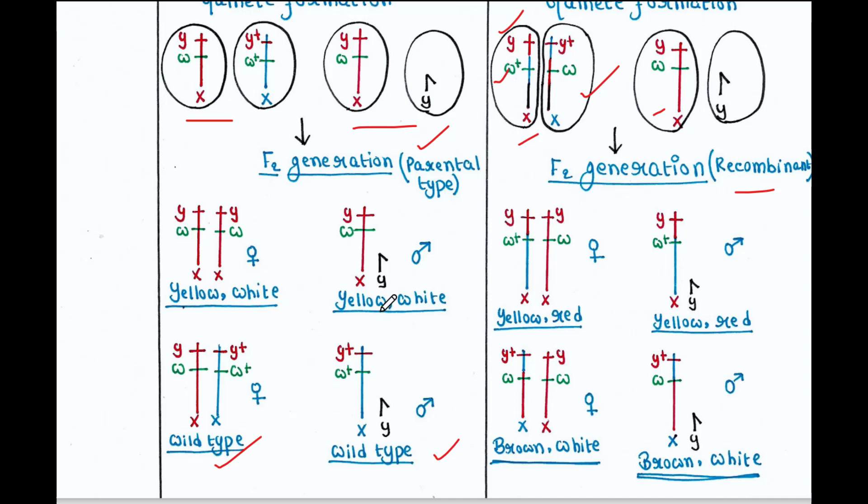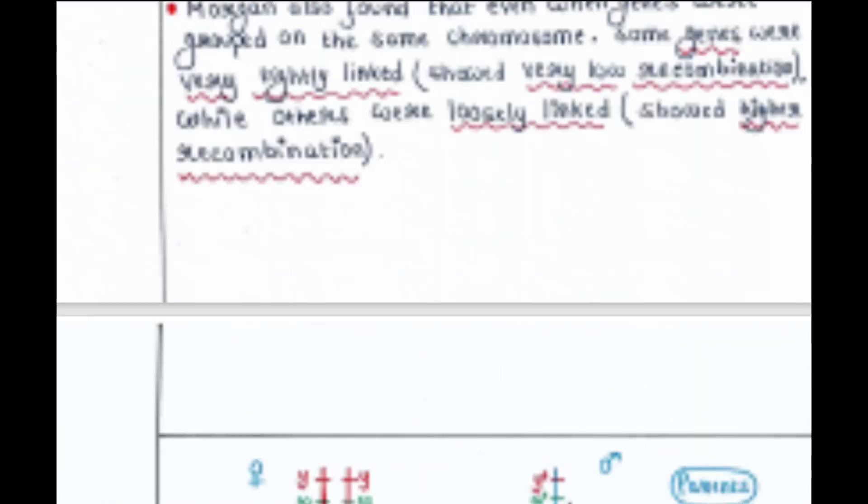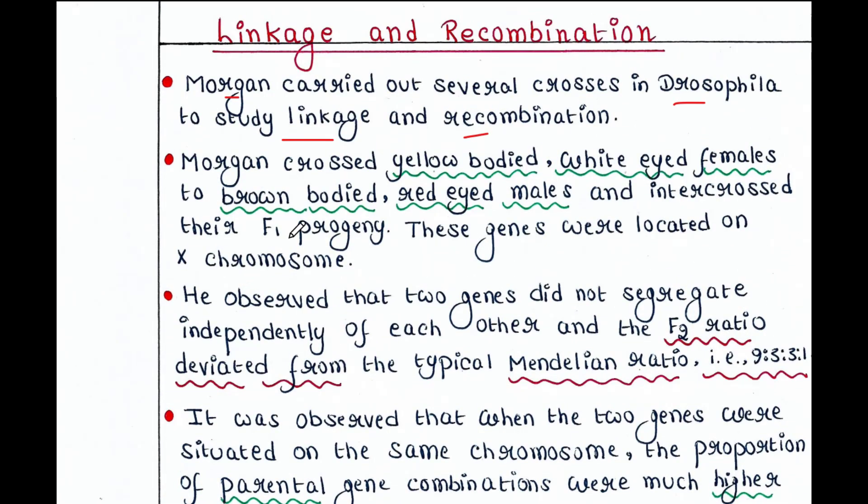Now let's check the text. Morgan crossed yellow bodied, white eyed females to brown bodied, red eyed males and intercrossed their F1 progeny. These genes were located on X chromosome. He observed that two genes did not segregate independently of each other, and the F2 ratio deviated from the typical Mendelian ratio, that is 9:3:3:1.